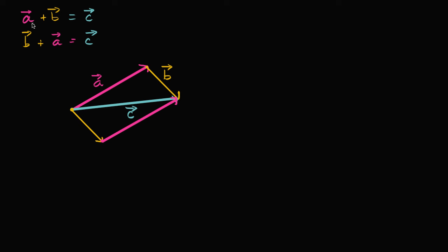Now what if instead of saying A plus B, I wanted to think about what A minus B is going to be. Let me write that down. Vector A minus vector B. And let's call that vector D. That is equal to vector D.